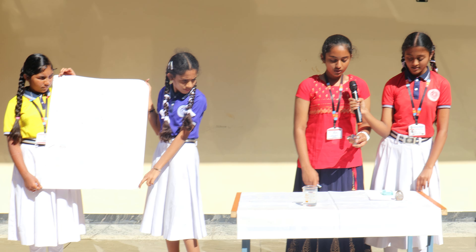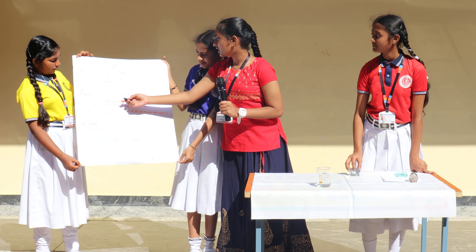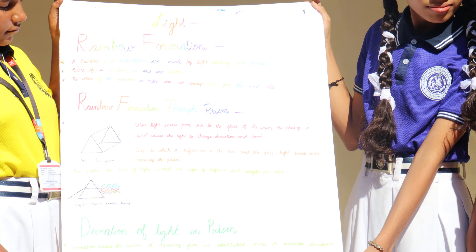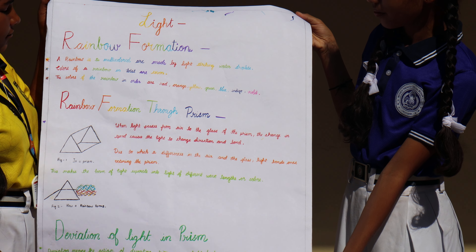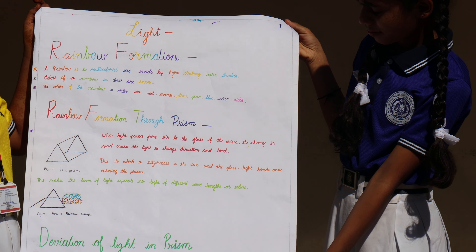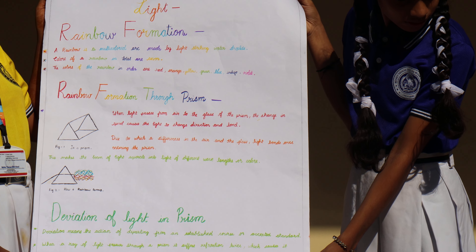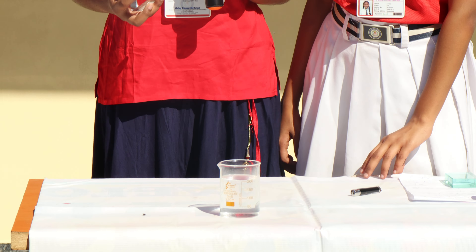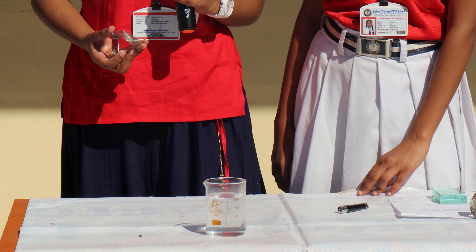Like this. So why does the rainbow form? A rainbow is a multi-coloured arc, or a path of a curve made by light striking water droplets. We all know that a rainbow is formed with seven colours. The rainbow forms because the light falls on the prism, and when it is tilted at an angle, the light — which is made of seven colours — splits into different colours like this.